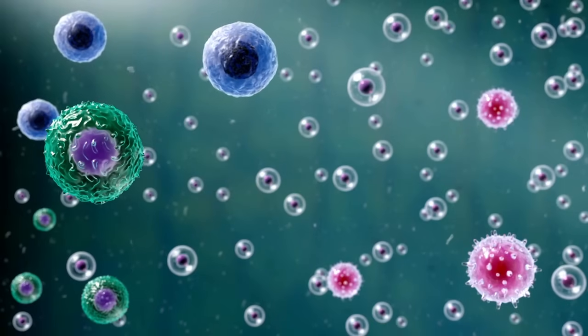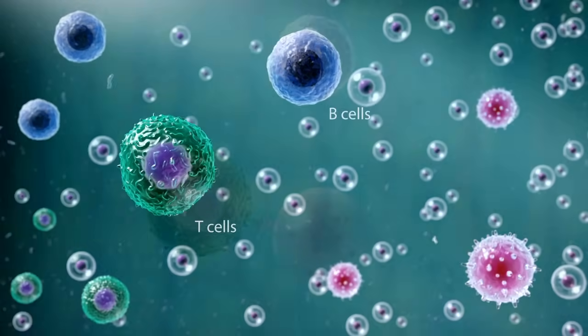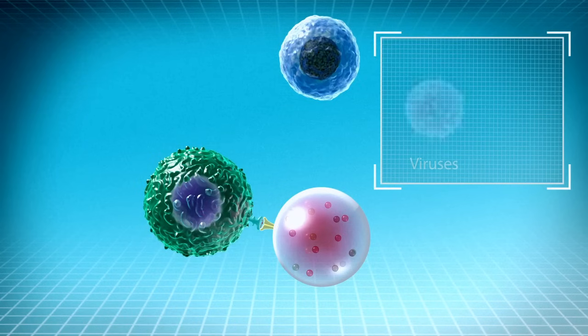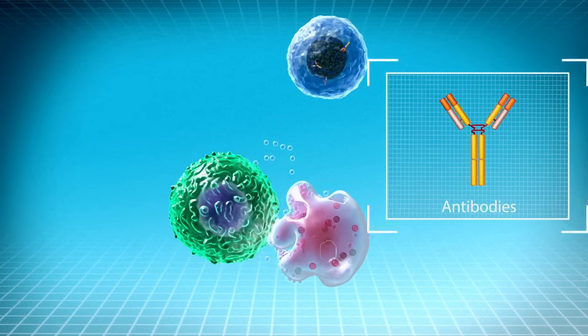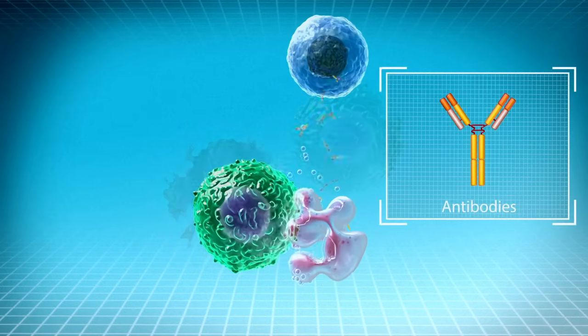Some of these immune cells, called T cells and B cells, are programmed to get rid of foreign invaders like viruses and bacteria. T cells release toxins against the foreign invaders and B cells make antibodies to neutralize them.